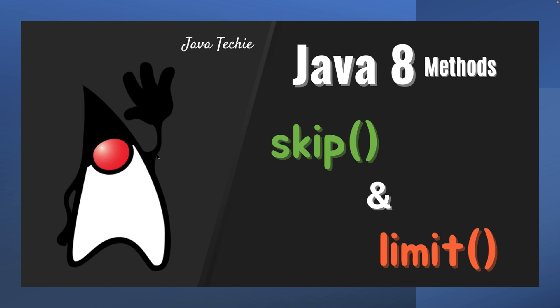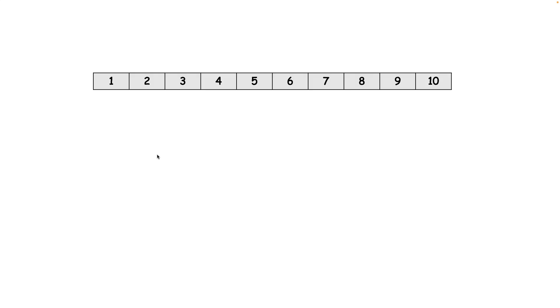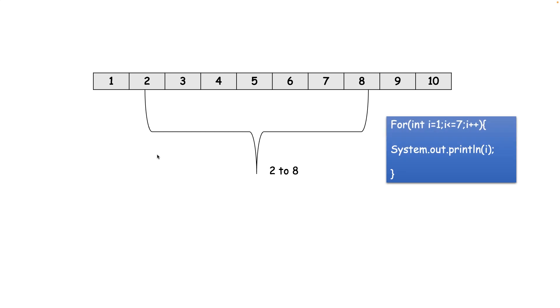Before we start, let me tell you a problem I faced in one interview. The interviewer asked me a simple programming question using Java 8. He said: assume I have 10 elements in a list, but I want to display only elements from 2 to 8 using Java 8. If it is Java 7, I could loop that list using index from 1 to 7 and print that value, but his expectation was to use only Java 8. That is where I understood how important these two methods are.